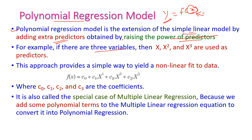Suppose we have three variables; then the predictors are x, x squared, and x cubed — we increase the powers of predictors. This approach provides a simple way to yield a non-linear fit to the data. If the data is non-linear, then the polynomial model is exactly predicting the output.